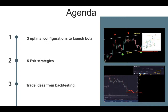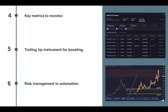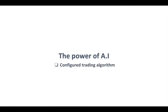Secondly, we will discuss five exit strategies: the break-even price, stop loss, take profit, and other features. Finally, we'll cover trade ideas generated from back testing, key metrics to monitor including investment change and bot profit, the trading up feature for boosting performance on a rising market, and risk management in automation.